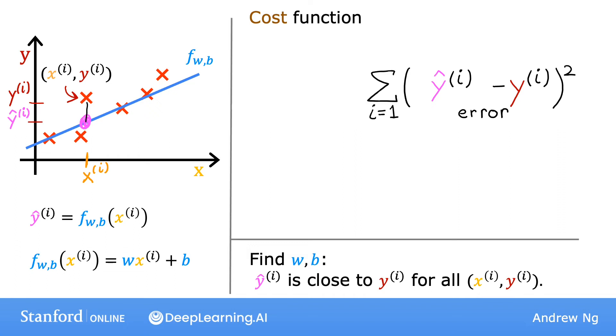We'll sum from i equals 1, 2, 3 all the way up to m. Remember that m is the number of training examples, which is 47 for this data set. Notice that if we have more training examples, m is larger and your cost function will calculate a bigger number since it's summing over more examples. So to build a cost function that doesn't automatically get bigger as the training set size gets larger, by convention, we will compute the average squared error instead of the total squared error. And we do that by dividing by m.